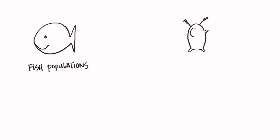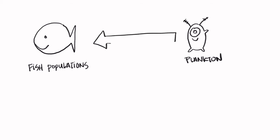Next, I'll pick another component or process from my list to include in the draft model. I'll start by adding plankton, which is one important component that I have starred on my research team's list. I will then make a connection between fish populations and plankton by drawing an arrow from one component to the other. For instance, I know that some fish eat plankton, so I think the number of plankton probably impacts the fish population.